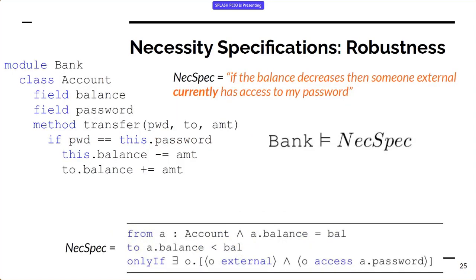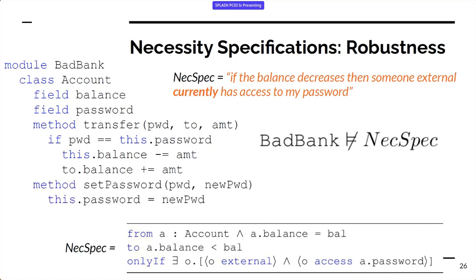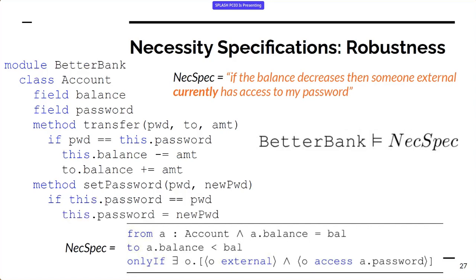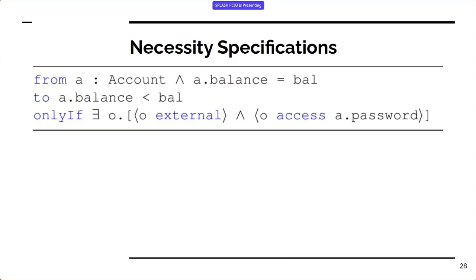Going back to look at our banks: clearly the original bank satisfies this specification, purely because it's such a simple class with a single function. Bad bank clearly doesn't — you don't need to know the password to drain the bank. If you have access to the account, you can reset the password to whatever you want and take all the money. Better bank does satisfy it. At this point we can verify this by inspection because these examples are relatively simple. But hopefully I've given an intuition for what our specifications mean and what they're doing.